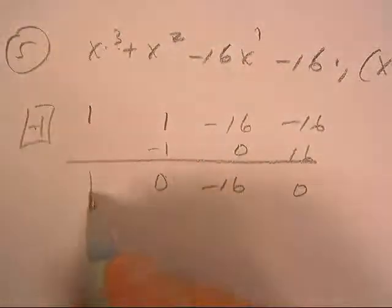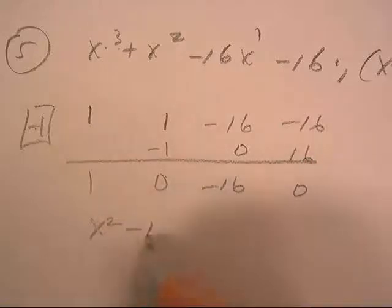So this was a cube, so this one would be a square, and there's zero x and minus sixteen.